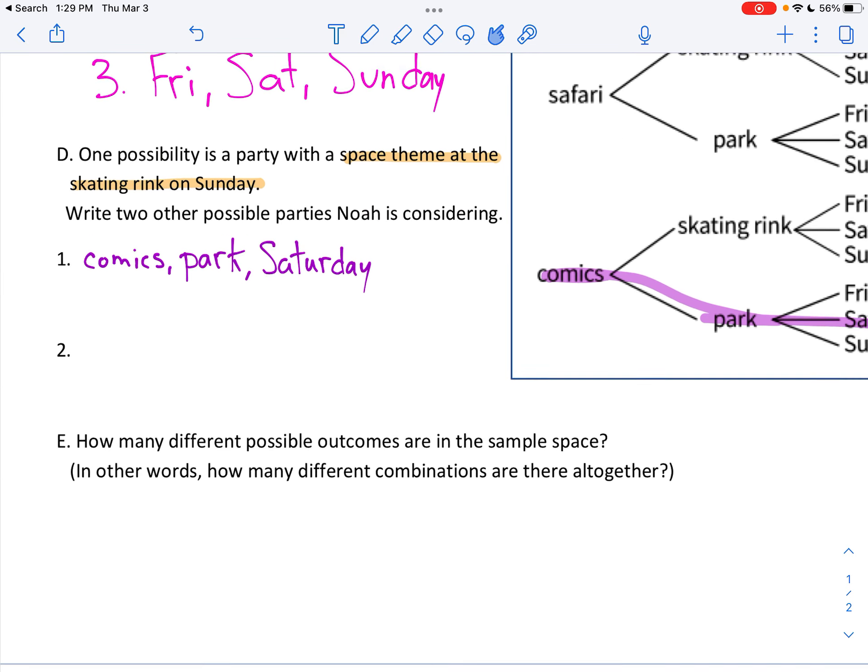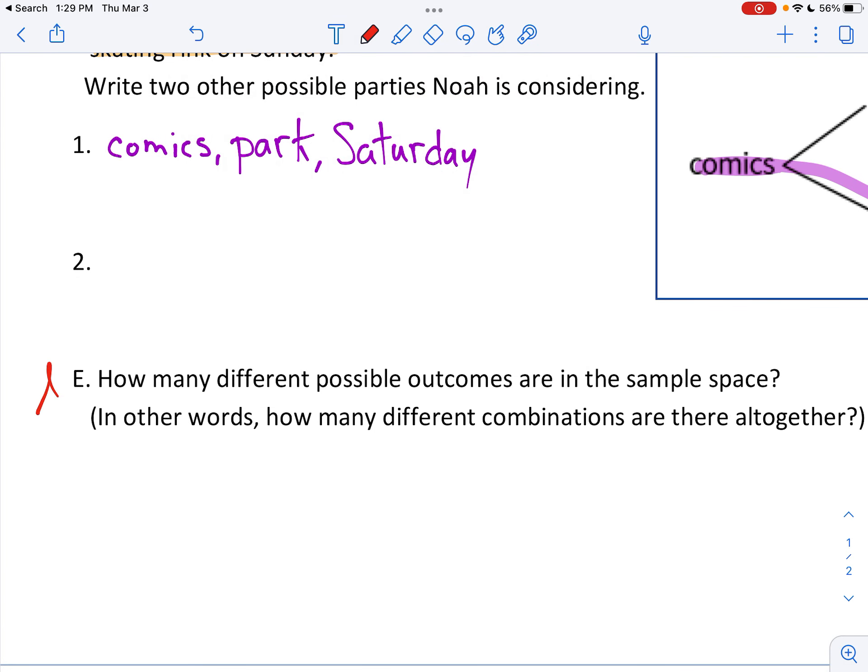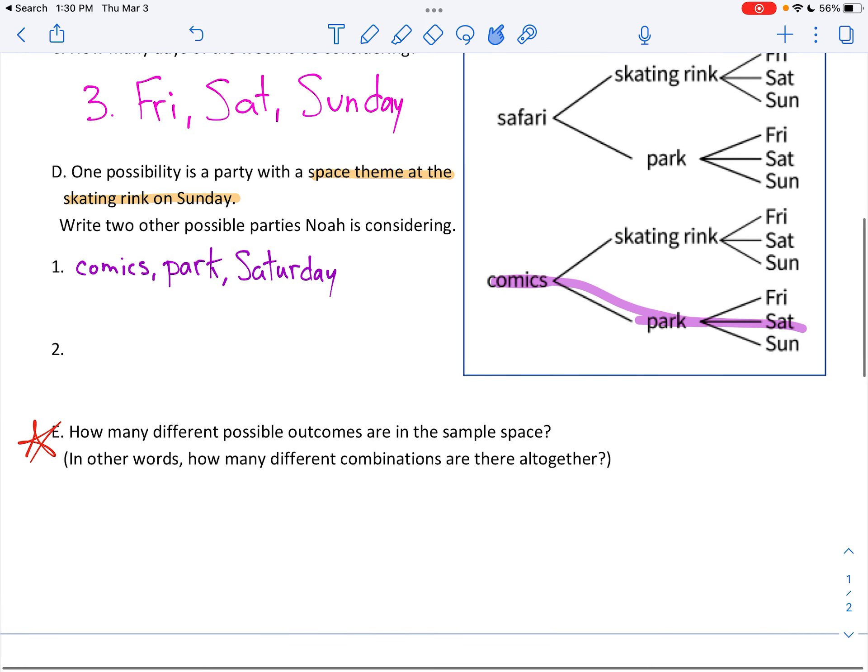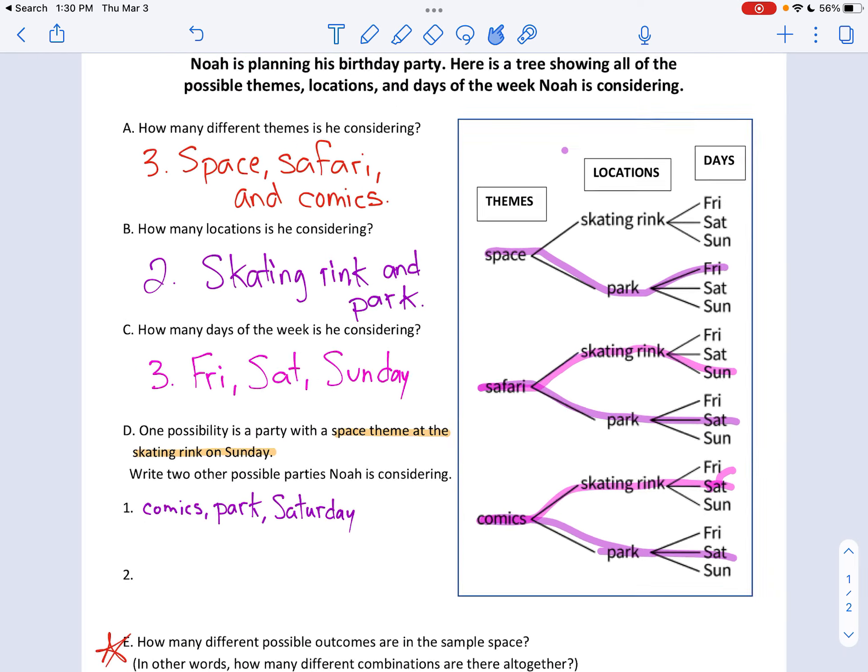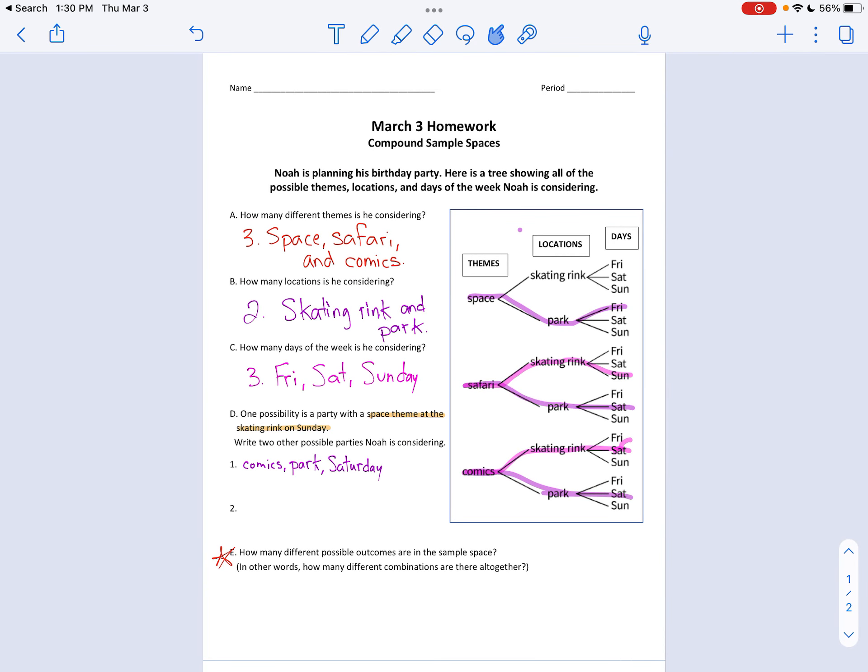And then E, I'm not going to tell you how to do. E, you need to do on your own. You try it. How many different possible outcomes are there? All right, another way of saying that is how many different combinations. You saw me highlight some of them, all right? So it goes from the theme to the location to the day. Safari Park Saturday, that's another one. Space Park Friday, that's another one. Safari Skating Rink Sunday, that's another one. Comics Skating Rink Saturday, that's another one. How many are hiding inside that tree? All right, do the best you can. We'll see you on Monday. Don't forget to turn in your homework.